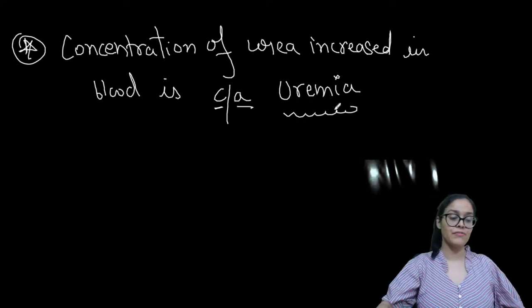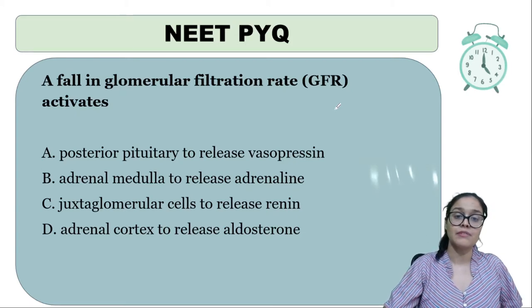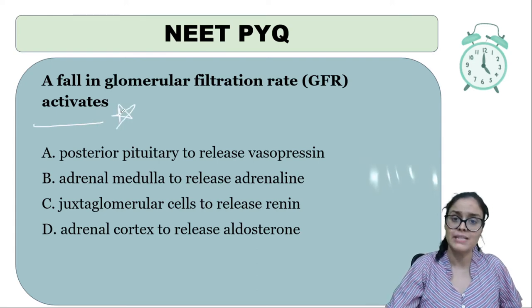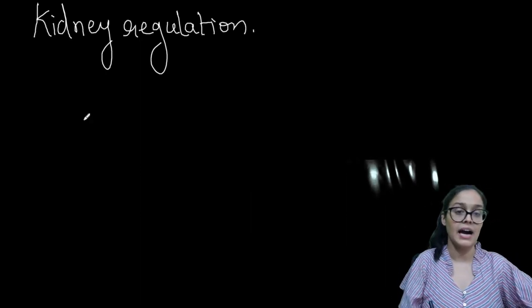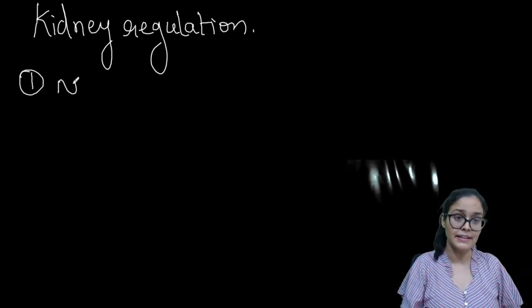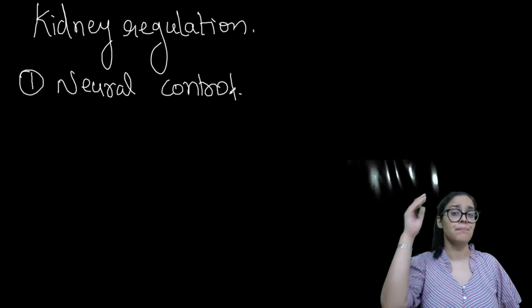Now we will do kidney regulation — how kidney function is regulated. First is neural control, meaning the brain controlling it. A common exam question is: a fall in GFR activates which part? I will explain all these things. When we talk about auto-regulation of the kidney, I will tell you all points in a summarized way, and then you will read NCERT.